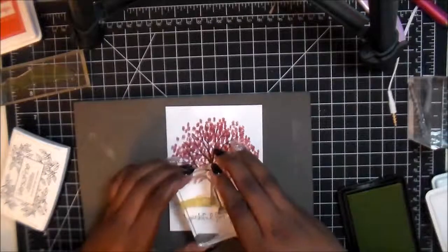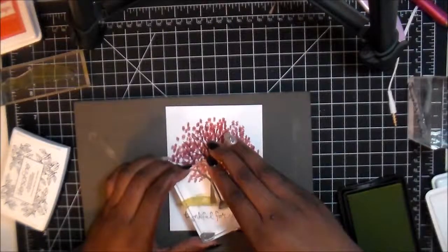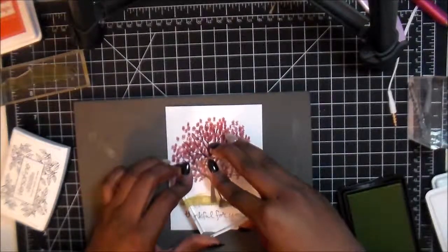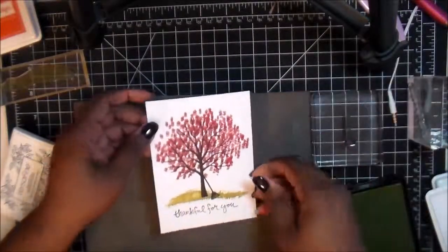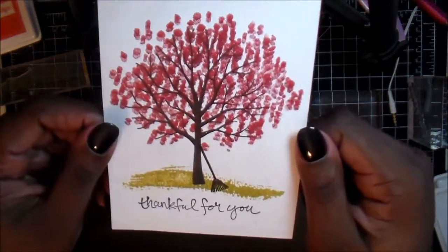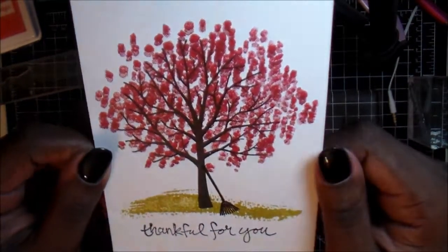And then the stamp set has a lot of extra pieces. They have like a bicycle you could have by the tree or on the path. It also has a swing. It has a lot of different things. You can have a lot of leaves floating in the wind. I decided to use the rake. I thought it was great for fall.